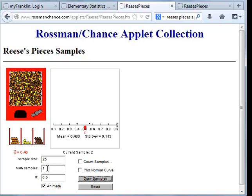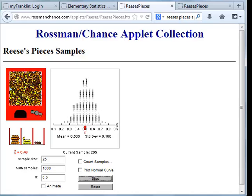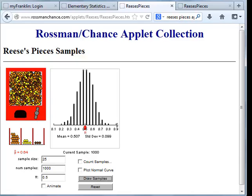Suppose I take 1,000 of these samples, though. We're looking for a pattern here. I'm going to turn the animation off so it doesn't slow us down. And look at what happens with repeated sampling. Look at that beautiful distribution that shows up.